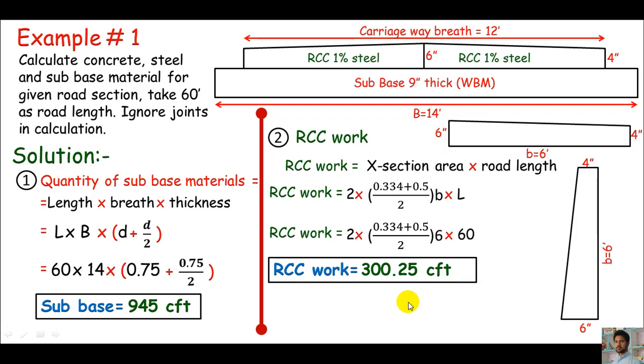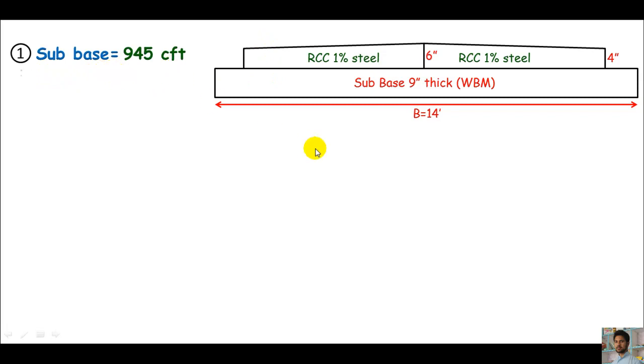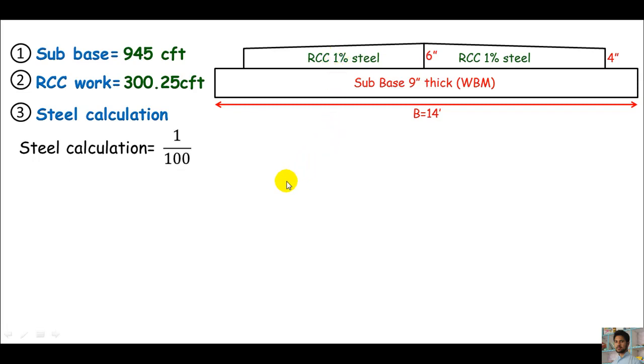Now we are ready for our third approach, which is steel work. How much steel is required for this RCC road? For steel calculation, we are informed to take steel as 1% of RCC work. Steel calculation equals 1%, which means 1/100.